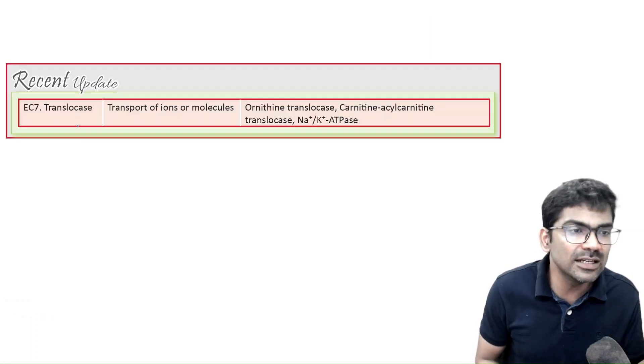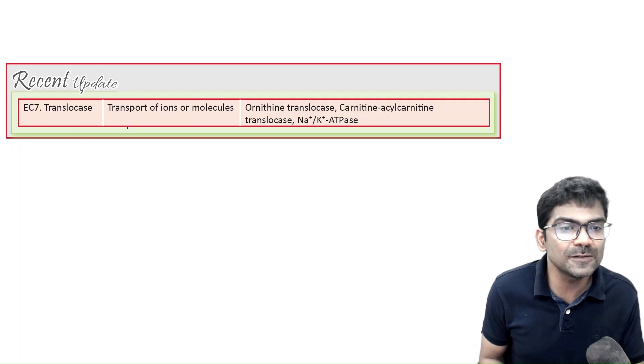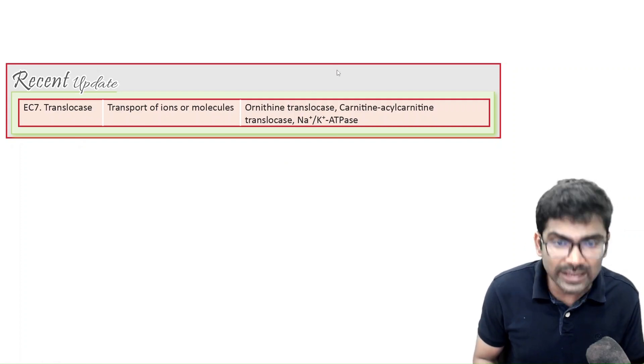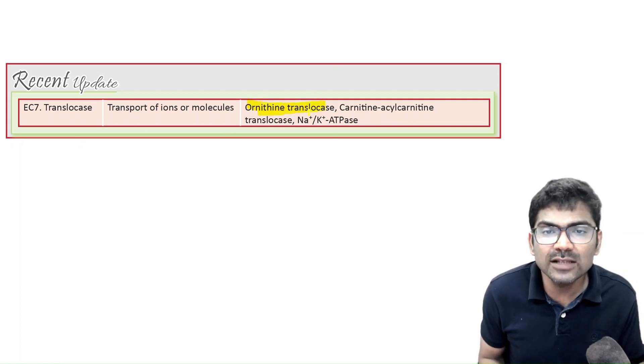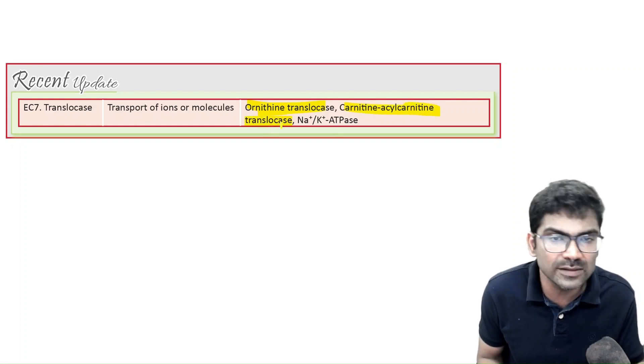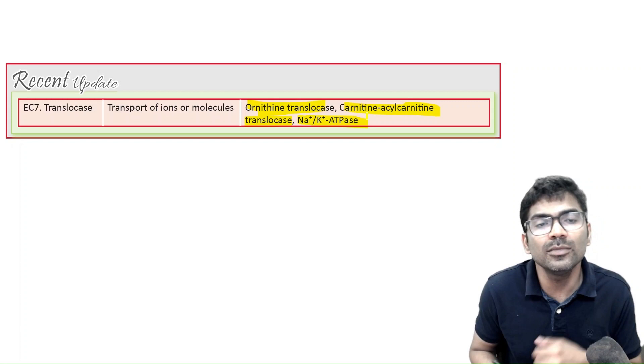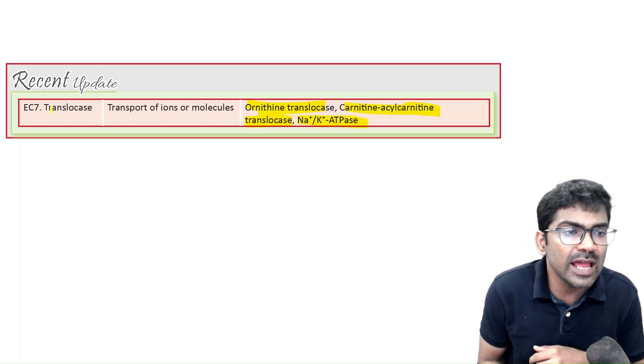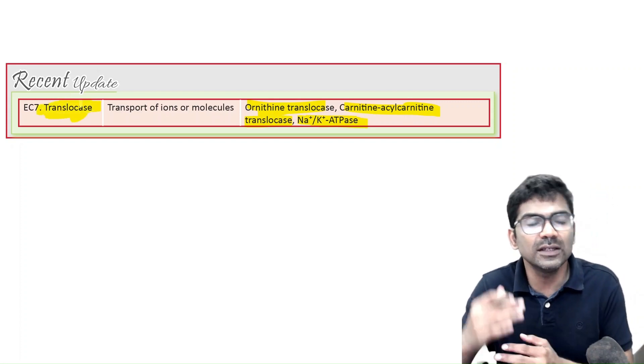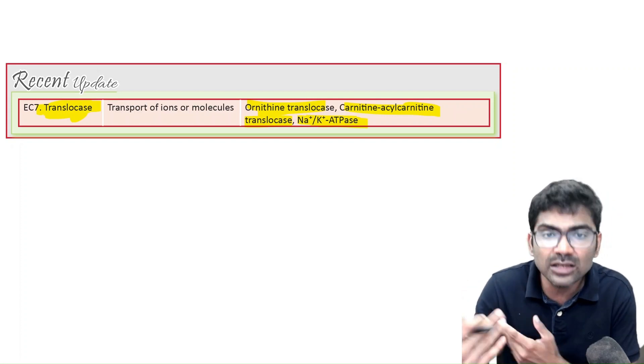Seventh class, which we have already learned, that is translocase. Here are the examples. Carnitine translocase, carnitine acylcarnitine translocase. In the name itself, there is translocase, sodium-potassium ATPase. So, translocase means it is going to change the location.